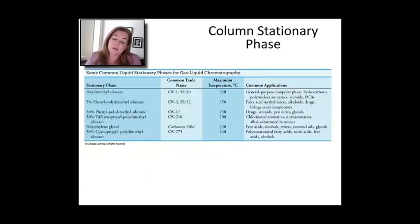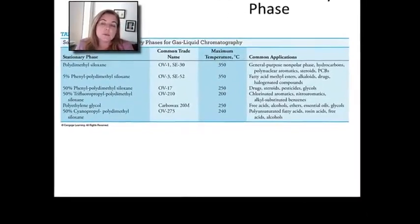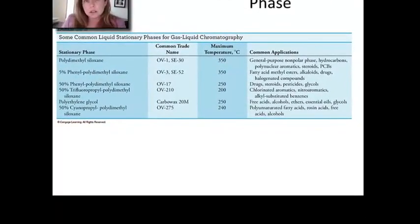So let's talk a little bit about what goes on the inside of the column, or the stationary phase of a GC system. Now, the stationary phase is an interesting choice. And what you see here in this table are some really classic kinds of materials that you'll find in a GC system.